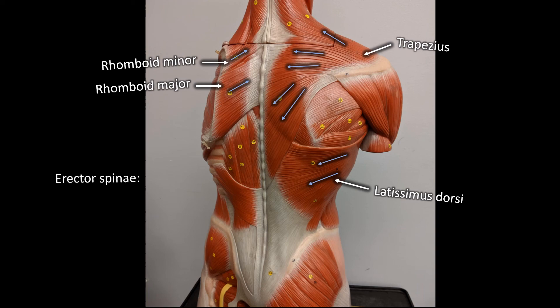Last but not least is the erector spinae, which is a group of three muscles in the back: the iliocostalis, longissimus, and spinalis. To easily remember their order, you can remember 'I love spaghetti.' These muscles help maintain an upright posture, or we can say they extend the spine — pulling the spine back.